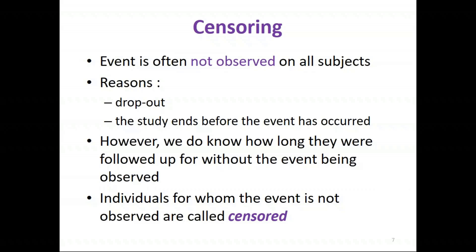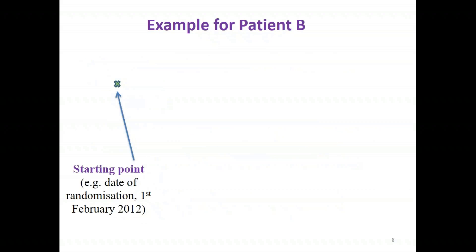However, what we do have is information for that patient — we know how long they were followed up for without the event being observed, and we can use that information in our analysis. These individuals for whom the event isn't observed are called censored observations.